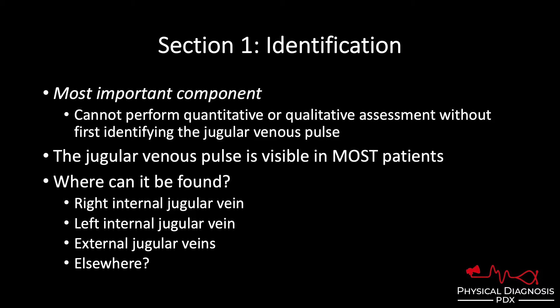So where do we look for the pulse? The best spot is the right internal jugular vein. It's ideal because of its direct route down into the right atrium. If you can't find the pulse on the right, you should go next to the left internal jugular vein. When we talk about the internal jugular veins, we're not actually visualizing the veins and vessels themselves — we're visualizing the movement of the skin that overlies the vessels. That's an important point.